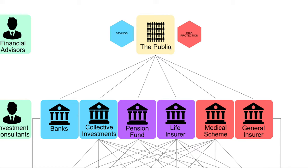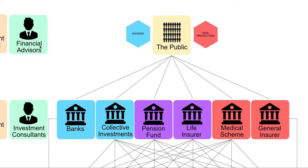What happens is the public will go to someone like a financial advisor who will point them in the right direction for which institution they should give their money to. A general insurer — you give them money, if you crash your car, they give you money back. Medical aid scheme — you give them money, you get sick, they give you money back. Life insurer — you give them money, you die, they give you money back. Pension fund — you give them money, and when you get old, they give you money back. Banks and collective investments kind of speak for themselves.